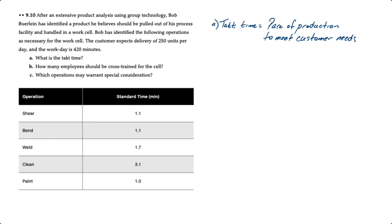So starting with the takt time, the takt time is simply the pace of production in order to meet customer needs. The formula is quite simple. It's the total work time available divided by the number of units required.